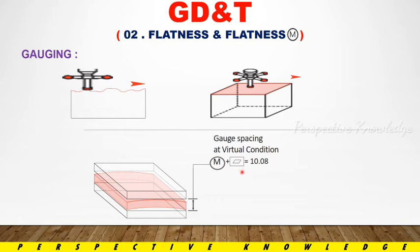When measuring flatness, you measure the values against the upper limit and the lower limit. If the values fall outside that range, it is not acceptable.